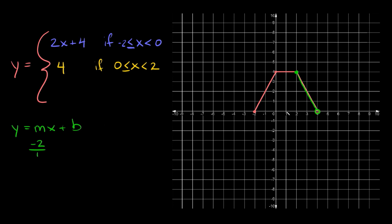Now the y-intercept — as you can see, the line doesn't hit the y-axis, so we have to extend it to see where it would hit. To get from one point to the other, we go up two over one, up two over one, up two over one. If we extended this line, we would hit it right here at positive eight.